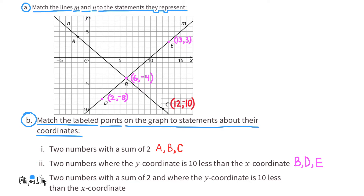For the third and last one, we need to find two numbers with a sum of 2 and where the y-coordinate is 10 less than the x-coordinate. Point B was in the first one and point B was in the second one, so let's look at point B. Its coordinates are 6 and negative 4. The sum of 6 and negative 4 is 2, and negative 4 is 10 less than 6, the x-coordinate.